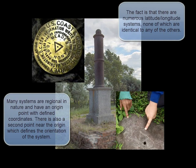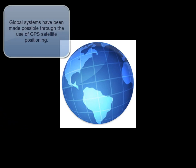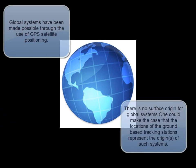For example, the origin of the NAD 27 North American datum is a set of reference monuments at Meads Ranch, Kansas. World datums, as their name suggests, are geographic systems utilized worldwide and their coordinates are determined through various means including protracted observations of satellite data.